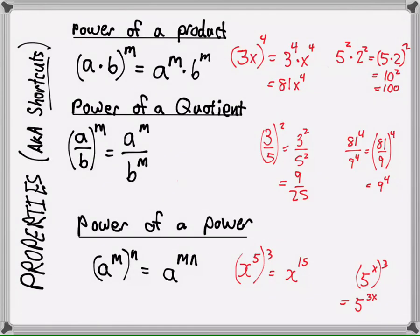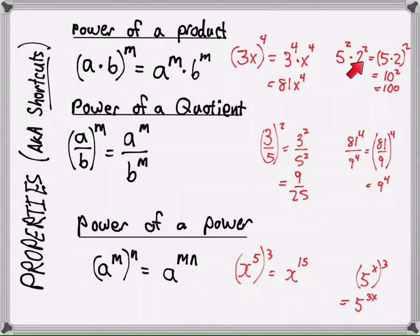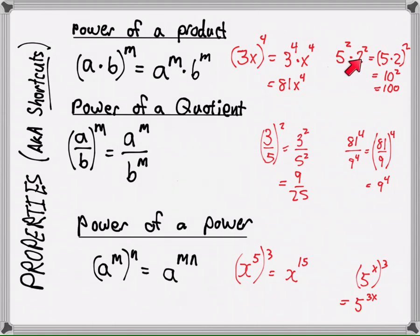Three more properties. Power of a product: if you multiply two numbers together to a power, you can distribute the power into the product. For example, 3x to the fourth is actually 3 to the fourth times x to the fourth. Or if you have 5 squared times 2 squared, you could make that (5 times 2) squared — ten squared equals 100, which is easier than multiplying 25 by 4. You can see the reasoning for using this property in reverse.